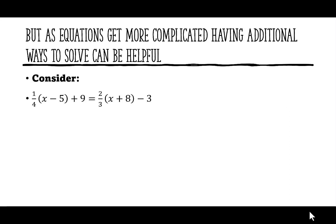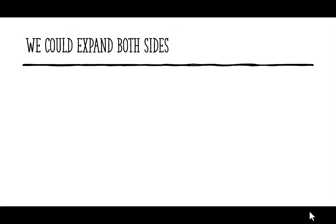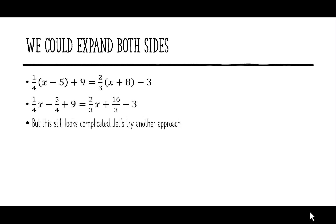So let's consider (1/4)(x - 5) + 9 = (2/3)(x + 8) - 3. We could expand both sides and we would get (1/4)x - 5/4 + 9 = (2/3)x + 16/3 - 3. But this still looks complicated, so let's try another approach.